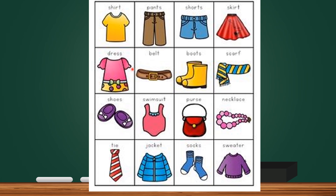Number six: belt. Belt. B-E-L-T. Belt is a band of leather, cloth, or other material that you wear around the waist to hold up your clothes or for decoration.